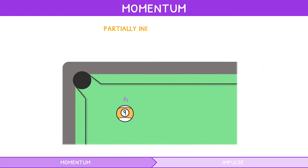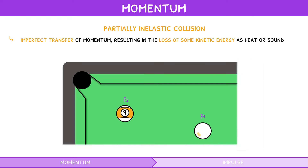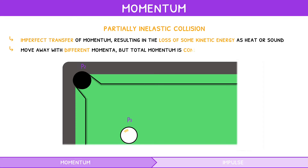During a partially inelastic collision, there is an imperfect transfer of momentum, resulting in the loss of some kinetic energy in the form of heat or sound. The objects move away with different momenta, but the total momentum is conserved.